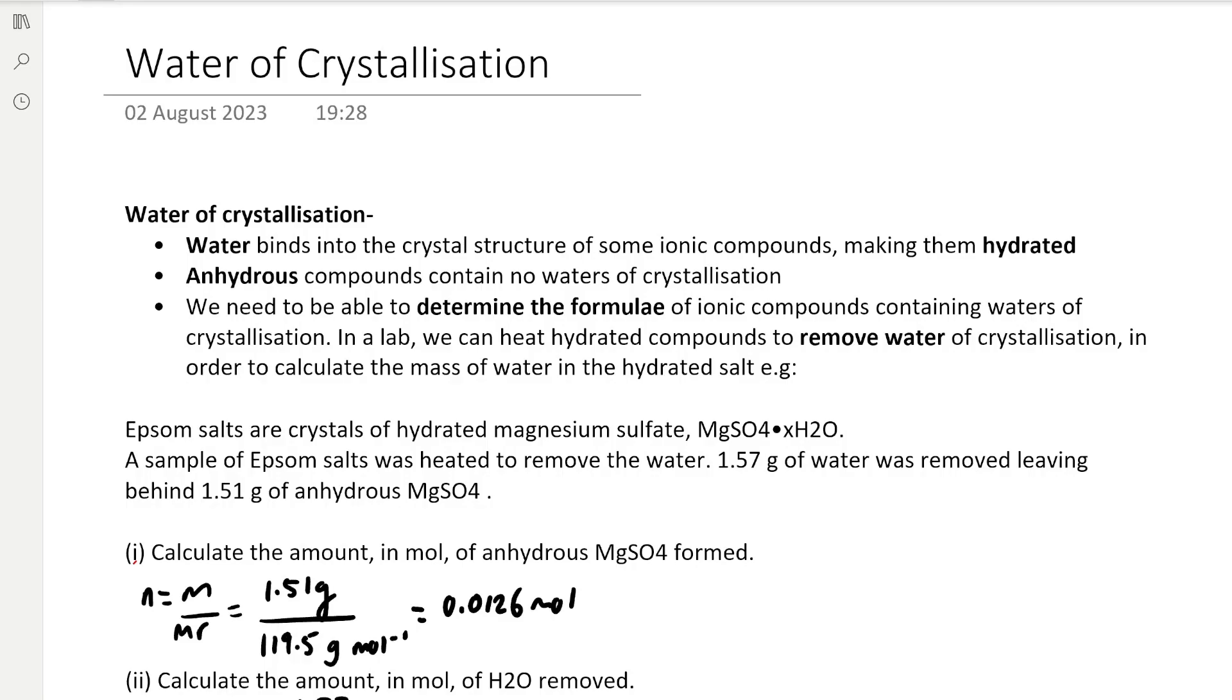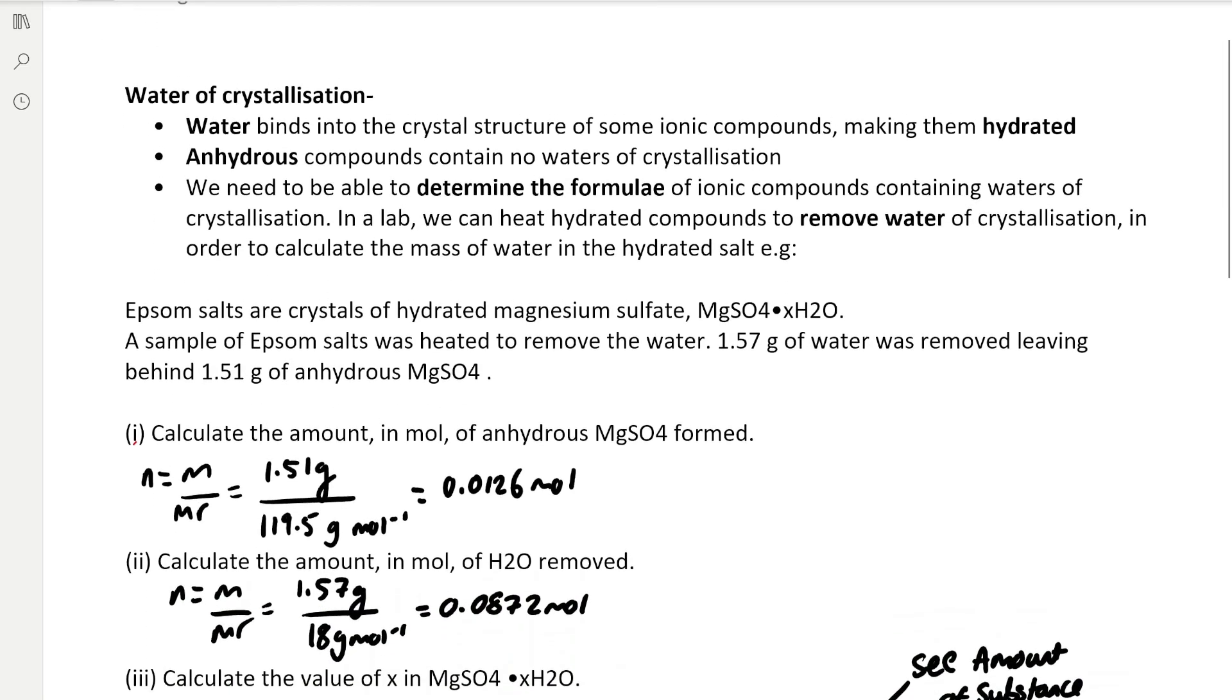For example, Epsom salts are crystals of hydrated magnesium sulphate, which we represent as MgSO4 dot X H2O. A sample is heated to remove the water. 1.57 grams of water was removed, leaving behind 1.51 grams of anhydrous MgSO4.